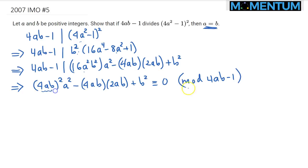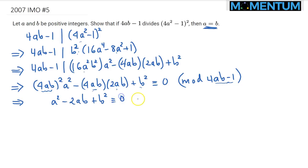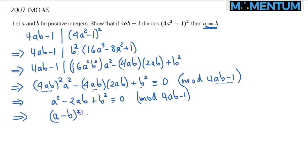But 4AB mod (4AB minus 1) is just one more than this, so that's just 1. So that would imply 1 squared times A squared, which is just A squared. This one is also congruent to 1. So therefore we have minus 2AB, and then we have B squared lastly. That's congruent to 0 in the same modulus — modulo 4AB minus 1. And lastly, this gives us A squared minus 2AB plus B squared, which is A minus B squared. A minus B squared is congruent to 0 modulo 4AB minus 1.